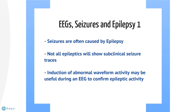However, not all epileptics will have these shown in every EEG. These abnormal waveforms can be induced in a patient by asking them to hyperventilate to reduce blood carbon dioxide levels, or to look at a flashing stimulus. Or else the patient may be asked not to sleep beforehand, as being drowsy can increase the chances of seeing some interictal activity. Non-epileptic seizures can also occur due to psychological rather than neurological conditions, and EEGs can be used to identify these by their lack of epileptic activity in the traces.